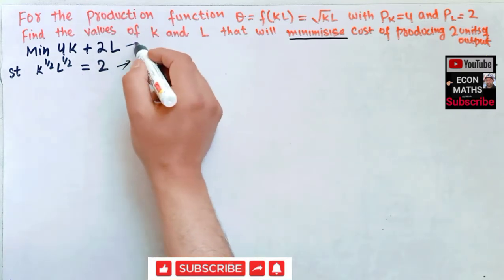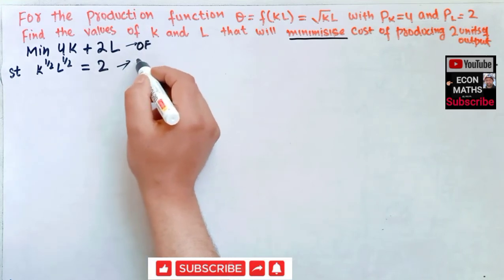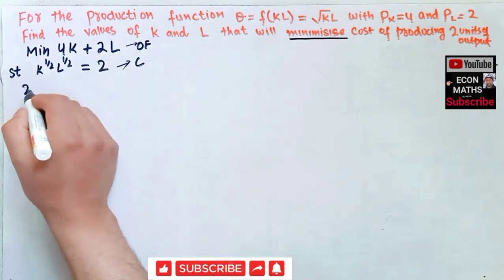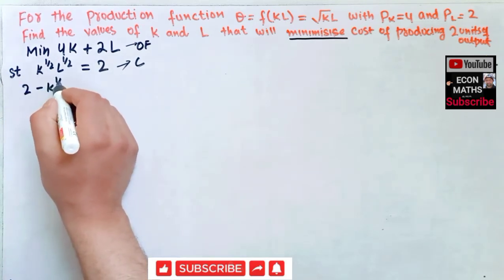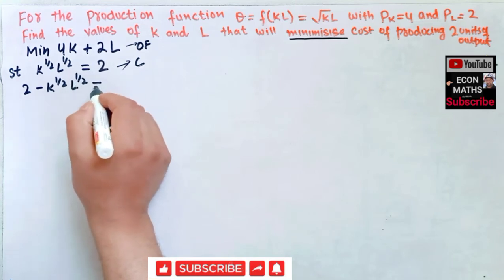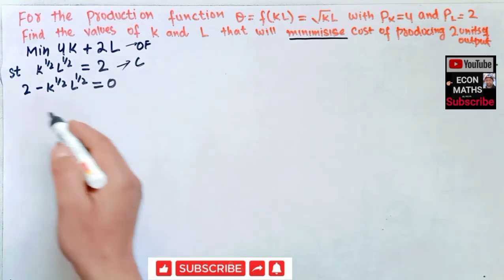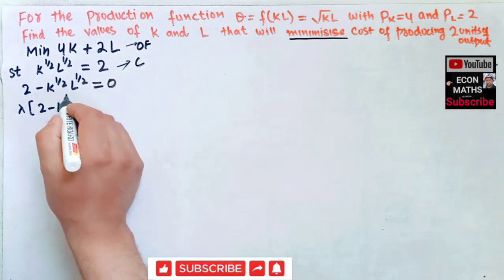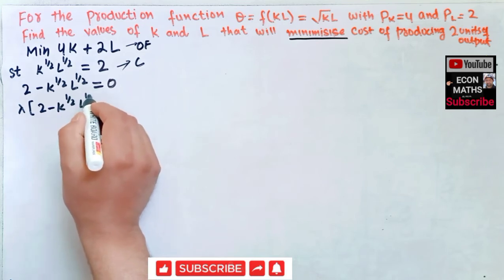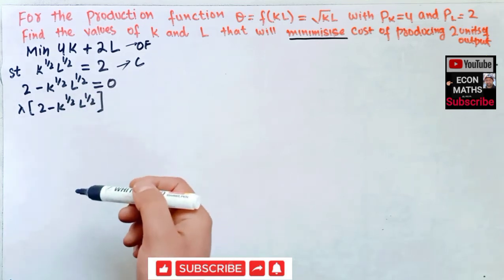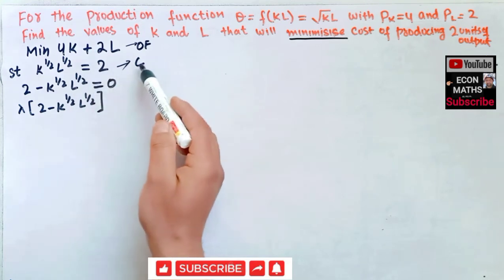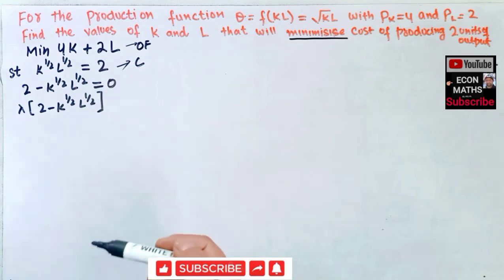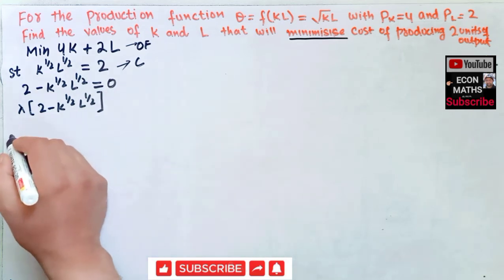The objective function is 4K + 2L and this is the constraint. The first step is to set the constraint equal to zero: 2 − K^(1/2) · L^(1/2) = 0. The next step is to multiply this constraint by lambda (λ), giving λ(2 − K^(1/2) · L^(1/2)). These are the two key steps before forming the Lagrangian function.